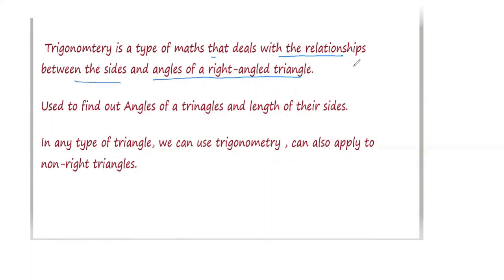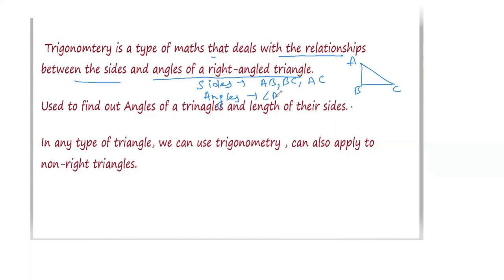If we are talking about any triangle, suppose triangle ABC, we have three sides and three angles. If I talk about the sides, we have side AB, side BC, and the third side AC. If I am talking about the angles, we have three angles: angle A, angle B, and angle C. So three sides and three angles.